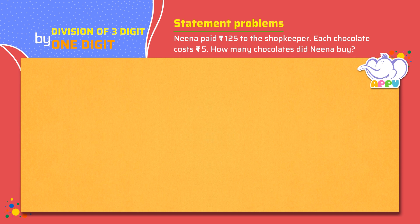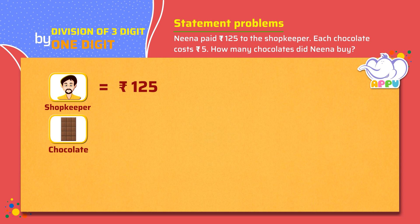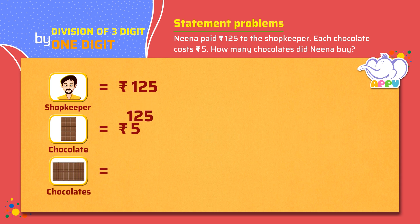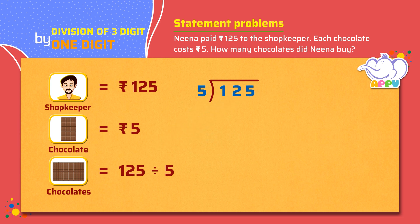Amount paid by Neena to the shopkeeper is rupees 125. The cost of each chocolate is rupees 5. To find the number of chocolates Neena bought, we divide 125 by 5. We write the division bracket and write 5 outside the bracket and 125 inside the bracket.